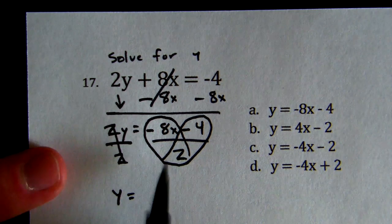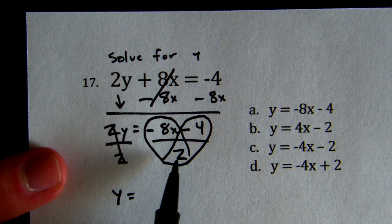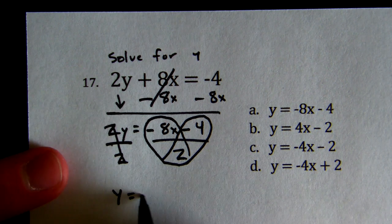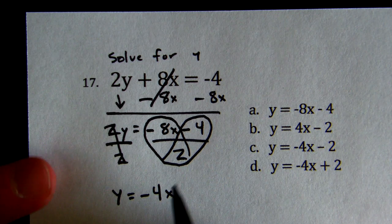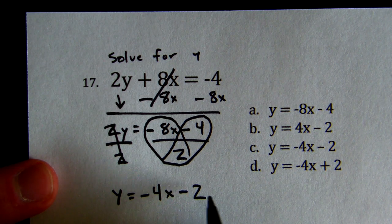y equals negative 8x divided by 2. Negative 8 divided by 2 is negative 4x, and negative 4 divided by 2 is negative 2.